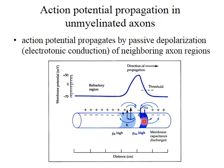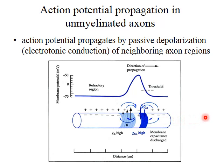One question we can ask is how does the action potential get from this segment down to the next region of the axon? When the axon is depolarized here, this depolarization will be passively propagated down the axon to other regions. As this depolarization spreads passively, it will depolarize the membrane of the axon further down, opening up sodium channels, leading to an influx of sodium, and further depolarization through positive feedback. Before we know it, the action potential has moved from this region to the next. And in a similar way, once this region is depolarized by influx of sodium, the action potential can first passively and then actively move along the axon through adjacent segments.